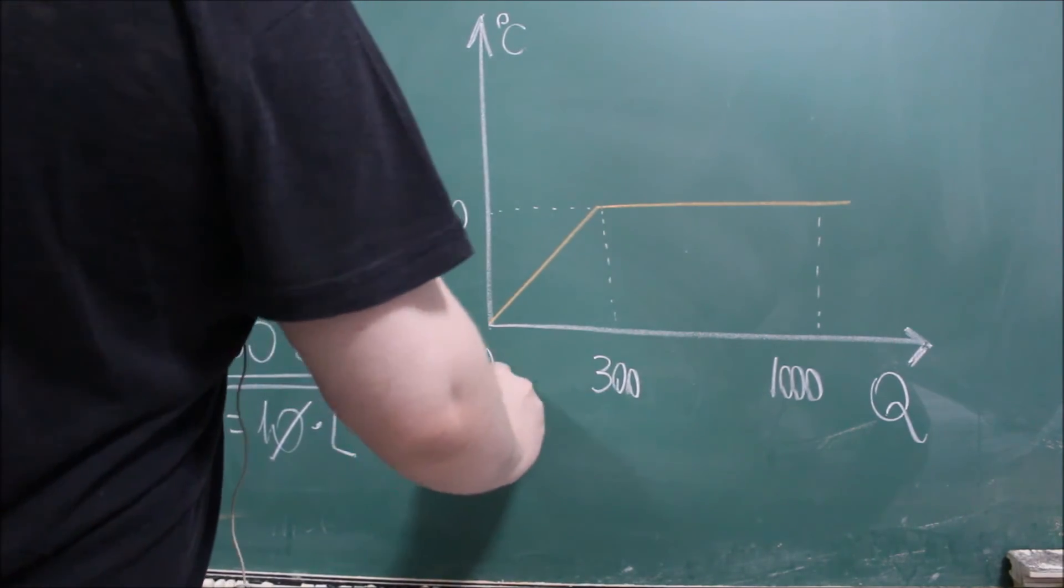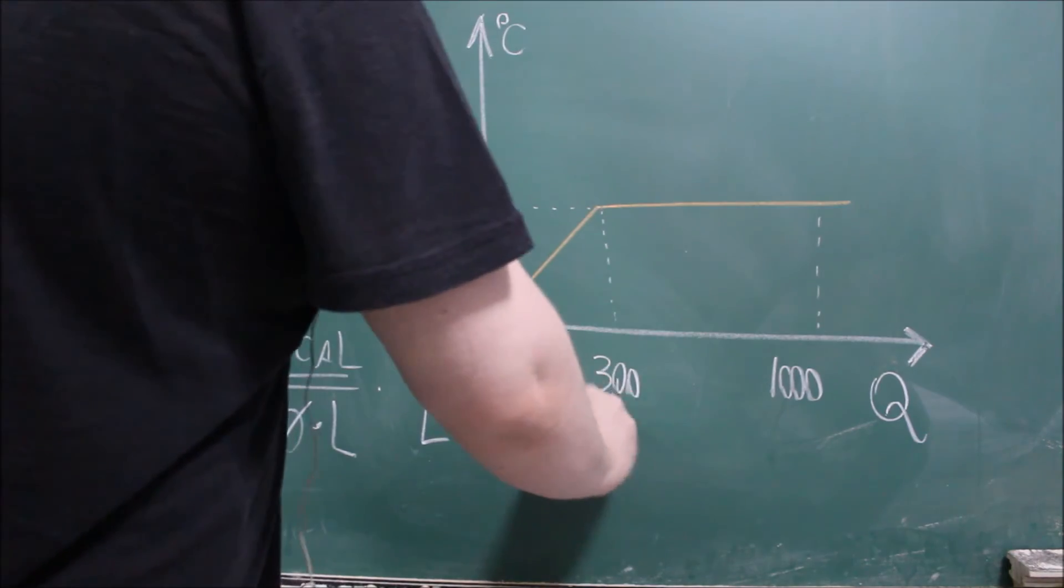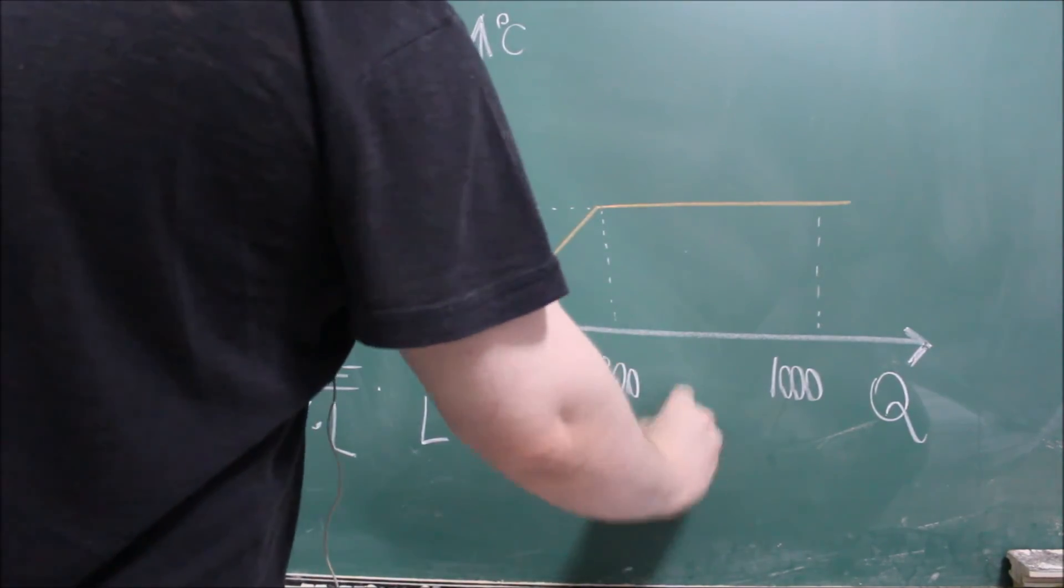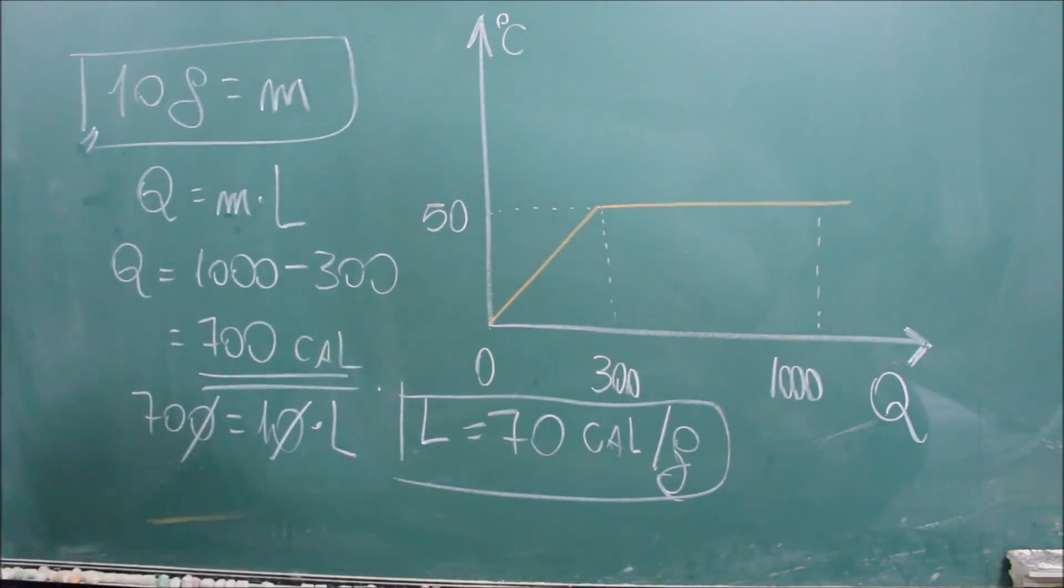Mas peraí. 70 é o quê? A gente tem Q aqui. Quando você passa o M dividindo, L fica desse lado. Q é dado em calorias. M é dado em gramas. Então é caloria dividido por grama. A análise dimensional mostra para a gente que isso aqui é dado em caloria dividido por grama. E está a resposta. 70 calorias por grama. Ou 70 calorias por grama de calor latente de mudança de fase para essa substância. O exercício está encerrado.